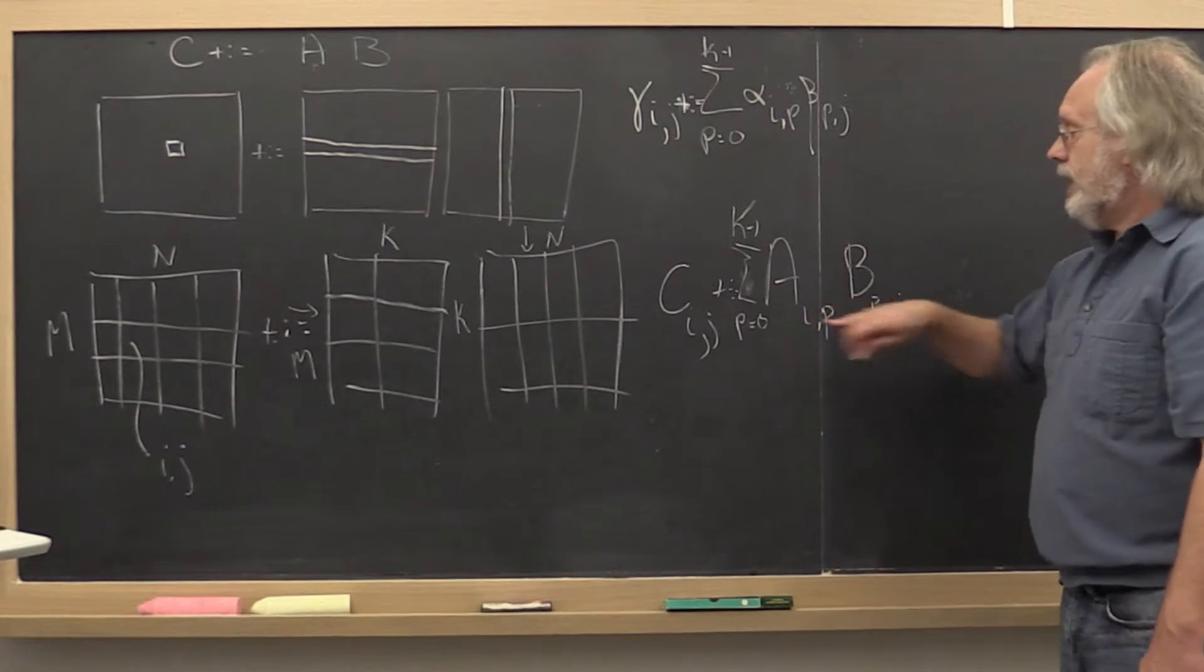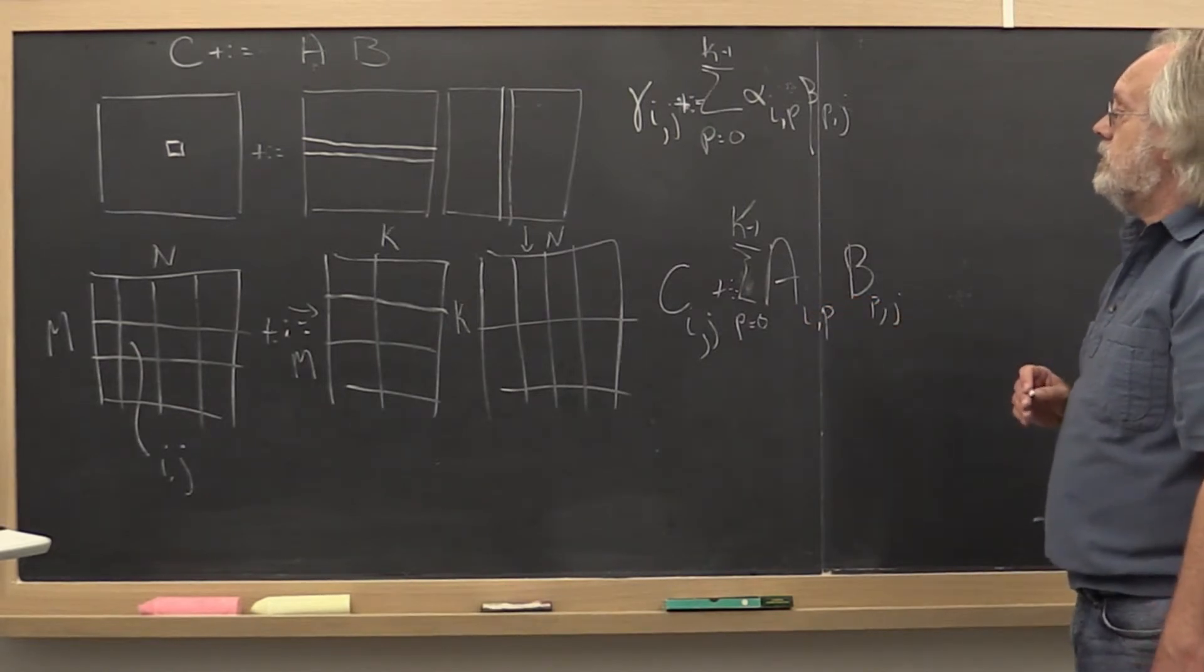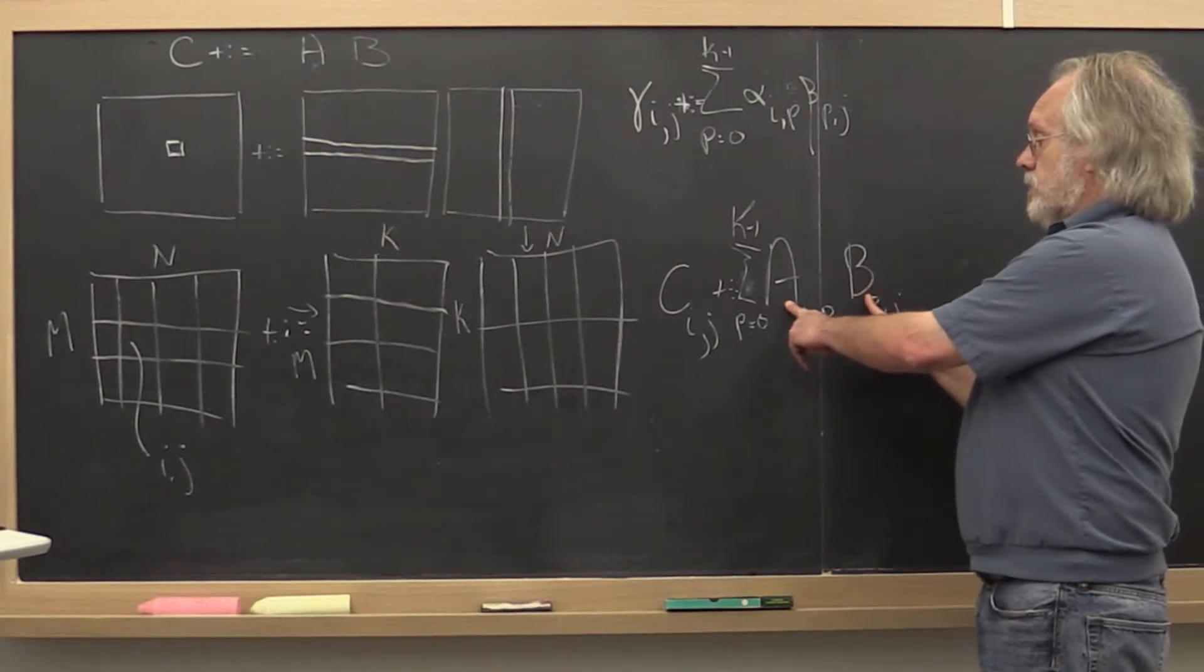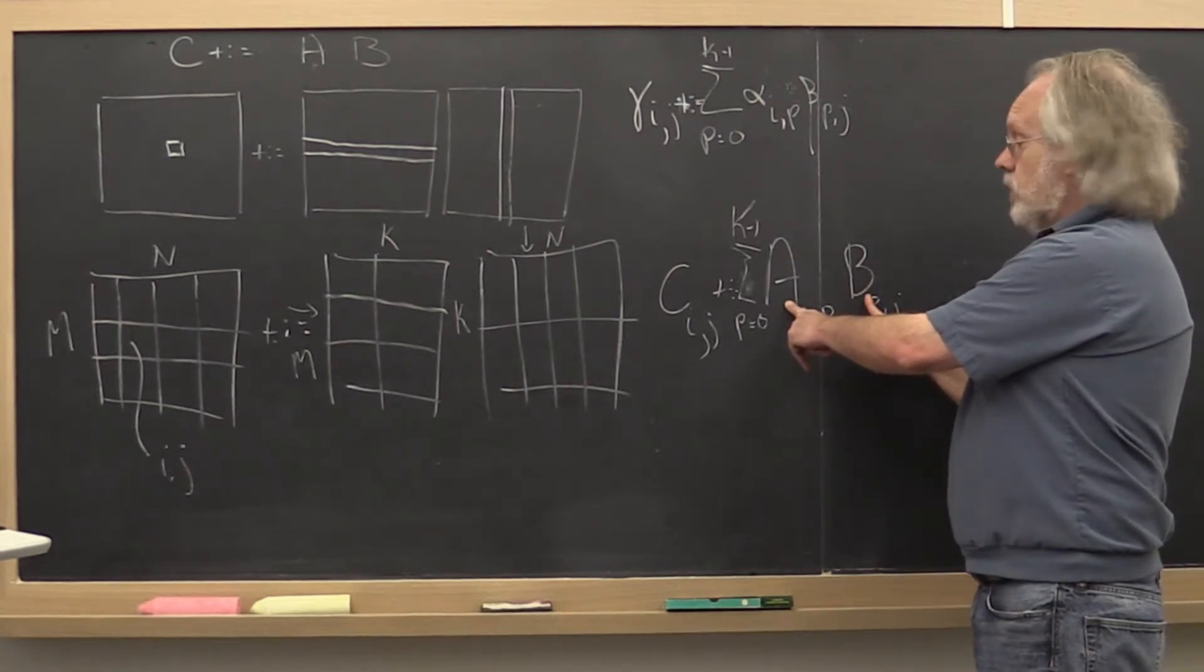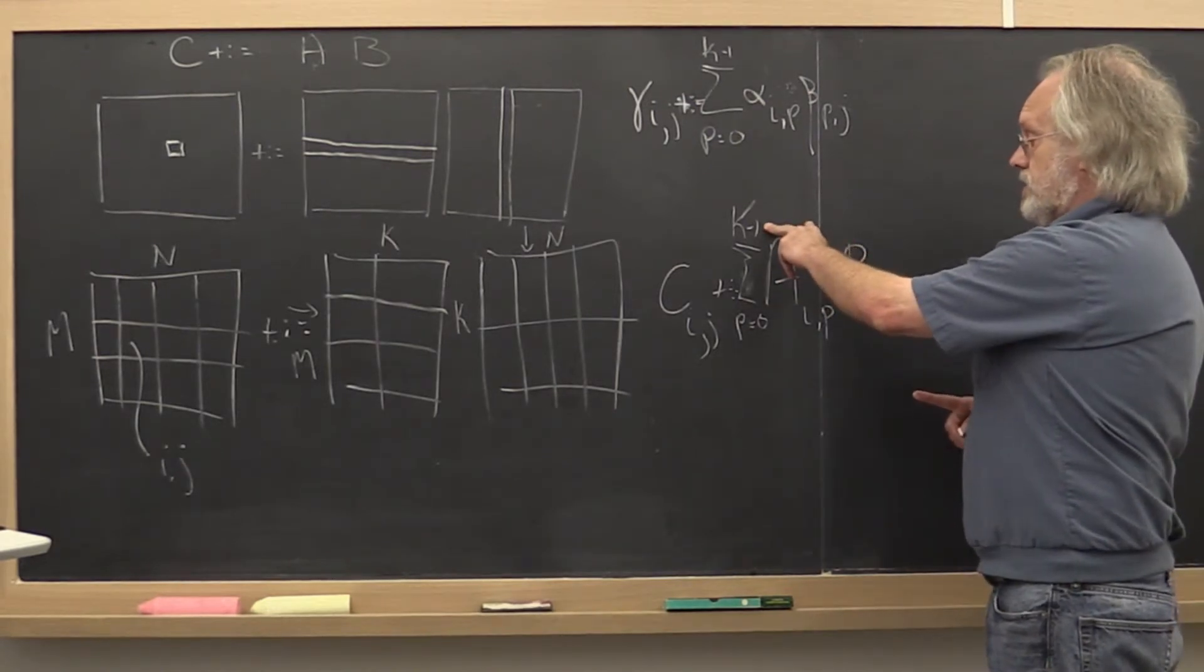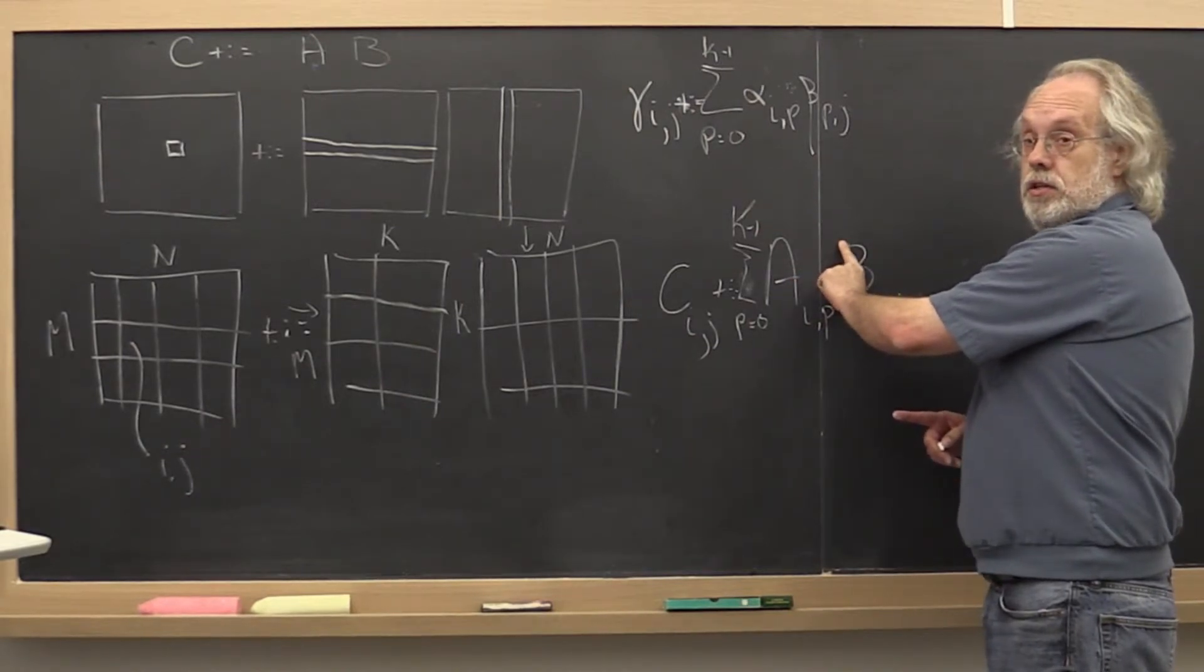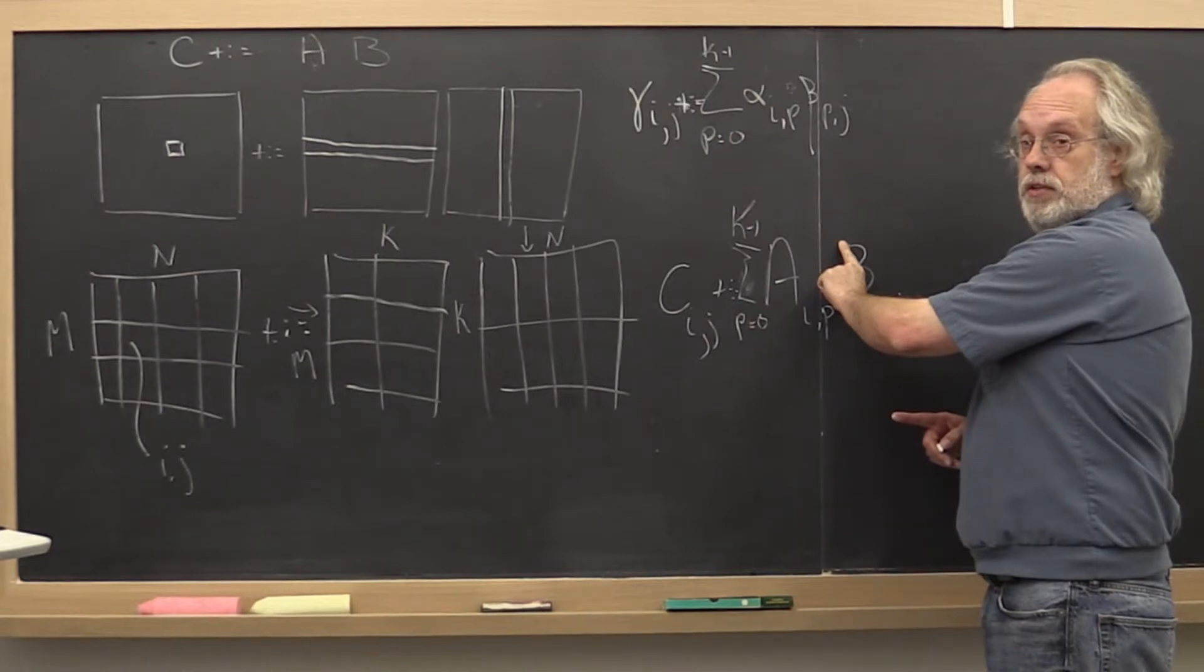Now in looking at this, there are a couple of things we need to notice. One thing is this matrix multiply must make sense. It only makes sense if the number of columns in this sub-matrix is the same as the number of rows in this matrix.